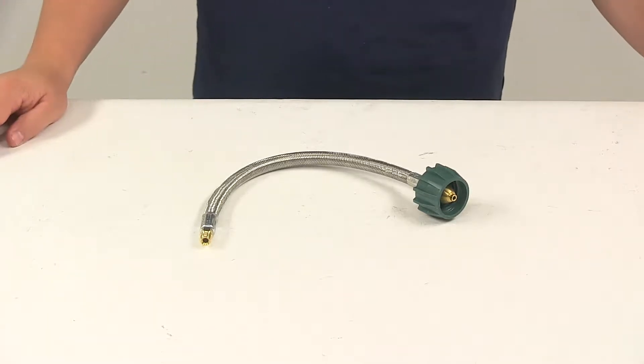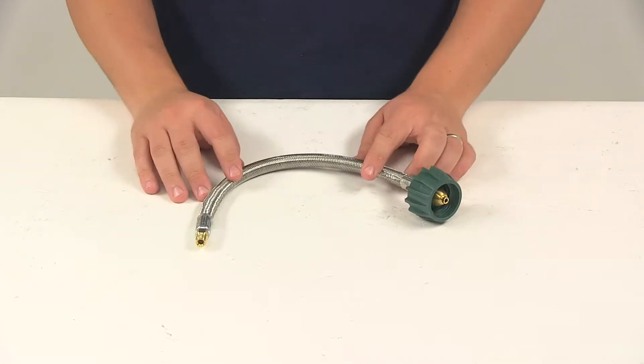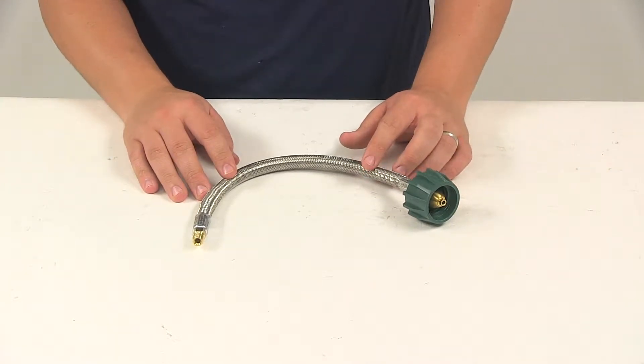Today we're going to be taking a look at the MB Sturgis Propane Hose Assembly. This is used to connect dual LP cylinder systems to a two-stage regulator.